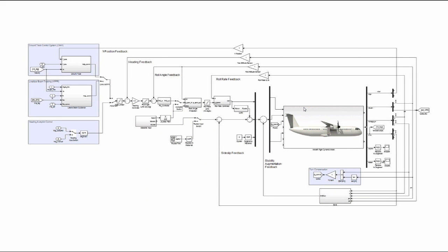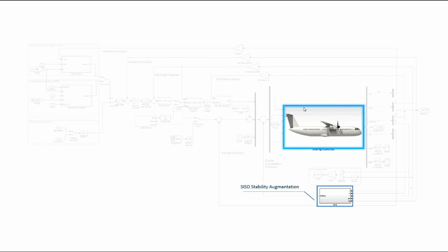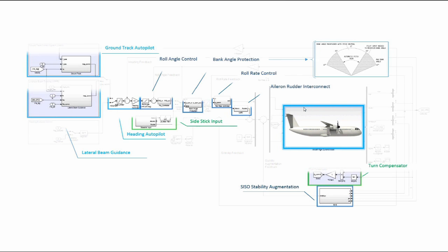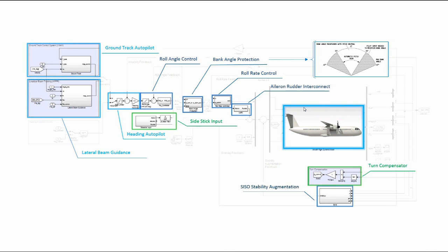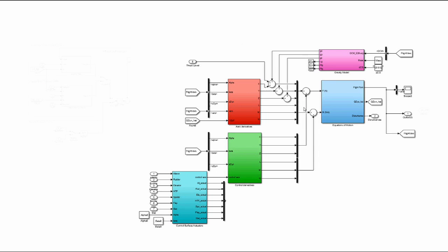The flight control computer is the core of the system and implements the 6DOF model, stability augmentation systems, and autopilot auto loops. If we look inside the 6-degree-of-freedom model, we find the typical aerodynamics and equations of motion blocks.